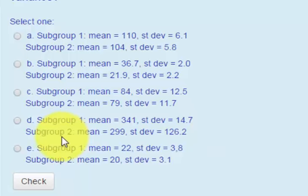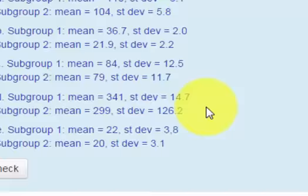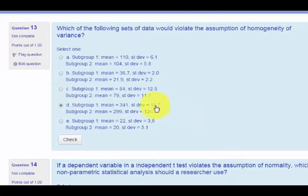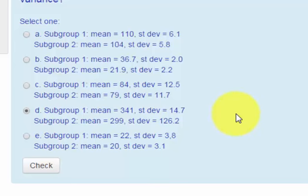Fourth one, look at this. So the second group has a mean of 299, but the standard deviation is skyrocketed. It's 126. The other one is 14.7. So this one, this set of data, would definitely violate the assumption of homogeneity of variance.